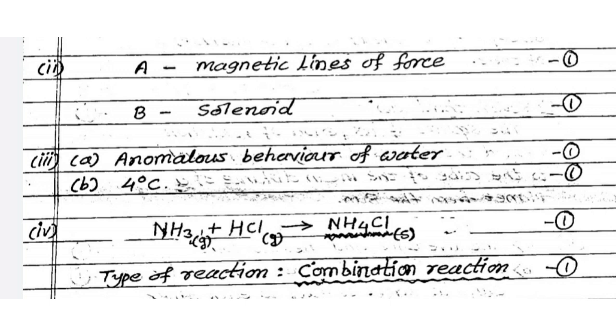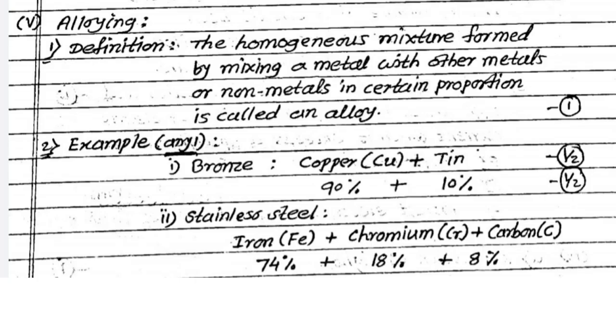Second option is given, observe the diagram. What is A? A is nothing but the magnetic lines of force. B is solenoid. Same way one graph is given. That graph is related to anomalous behavior of water. And that happened at 4 degrees Celsius. Complete the following reaction. NH3 plus HCL. Then what is formed? NH4CL, ammonium chloride. You are getting 1 mark for that. And what is that type of reaction? Combination.